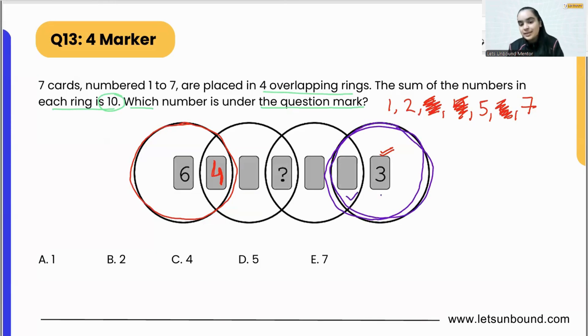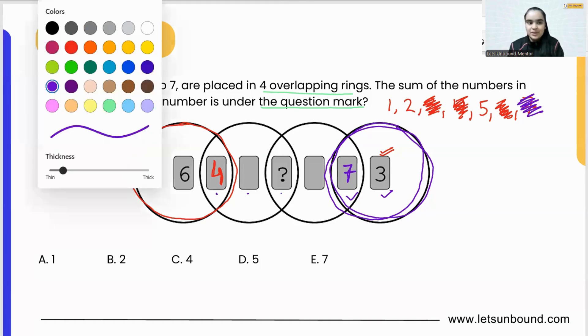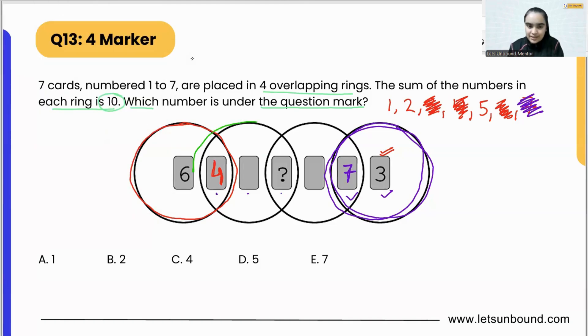In this ring as well, we are having two cards. 3 plus something has to be 10, right? So 3 plus 7 is 10. So we are done with 7 as well. Now what we need to think is 4 plus something plus something has to be 10. So this is going to be another circle which is having three cards. Now 4 plus something plus something equals 10.